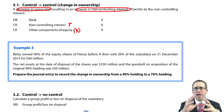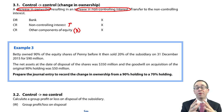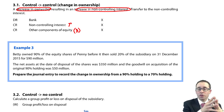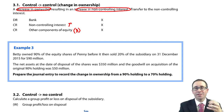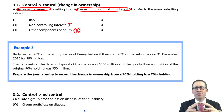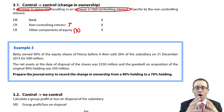So when you look at the change in ownership as a percentage we don't apply it to the non-controlling interest. We actually apply it to the assets, the liabilities and the goodwill because that's what we're giving them more of.